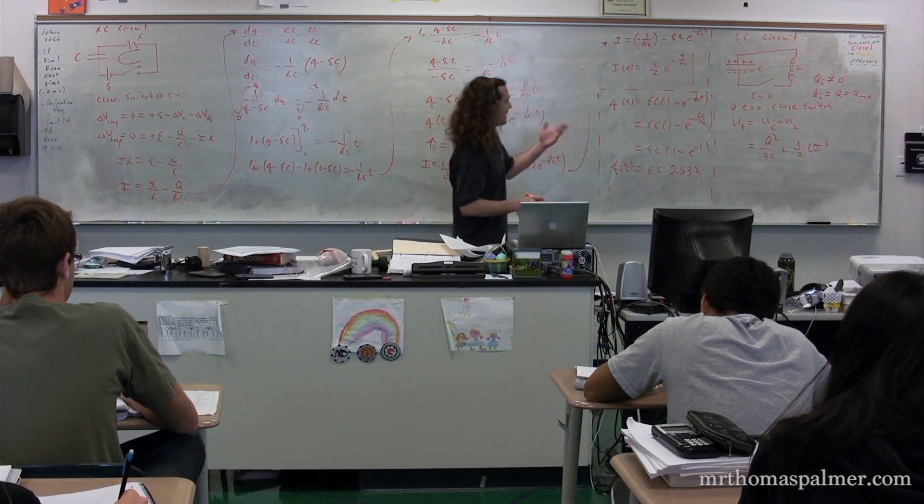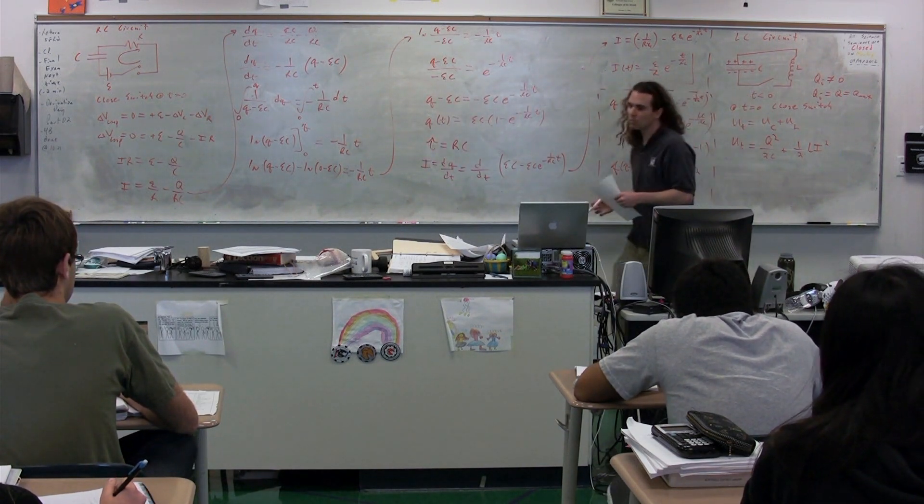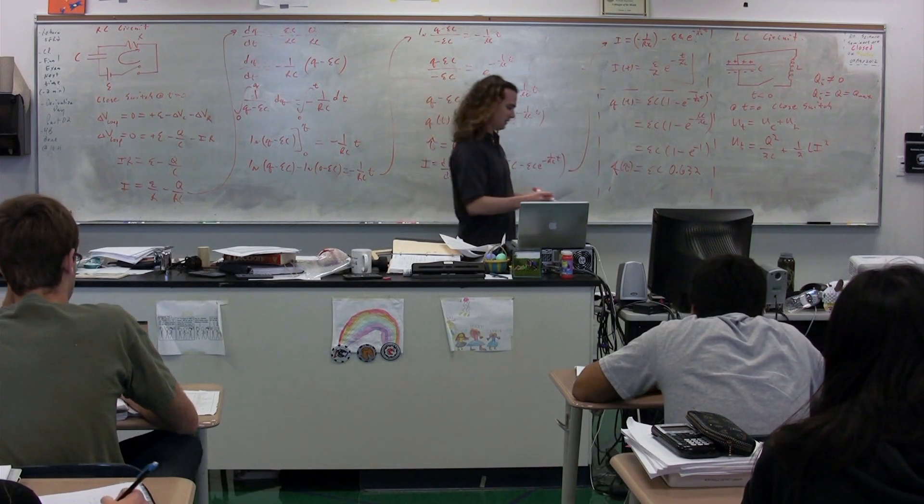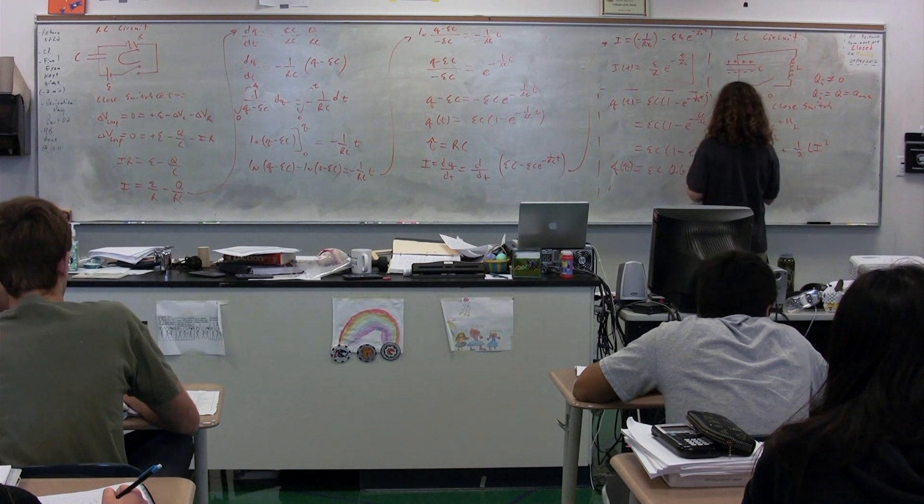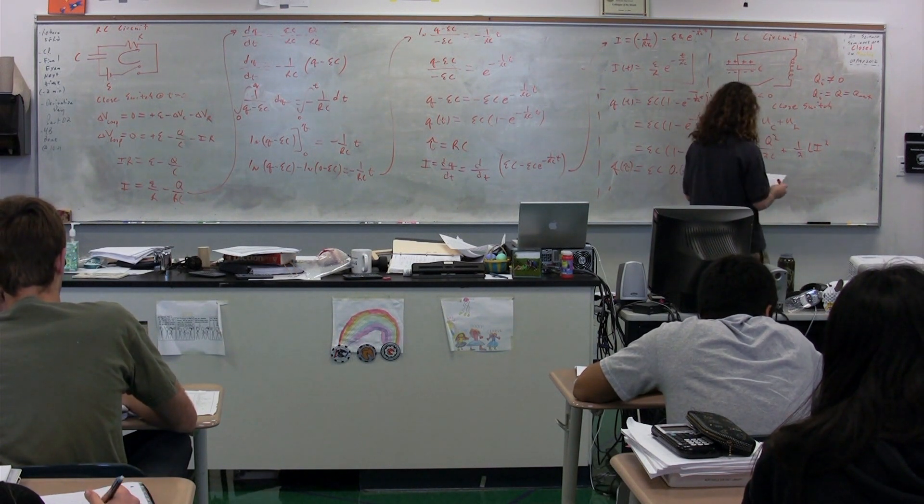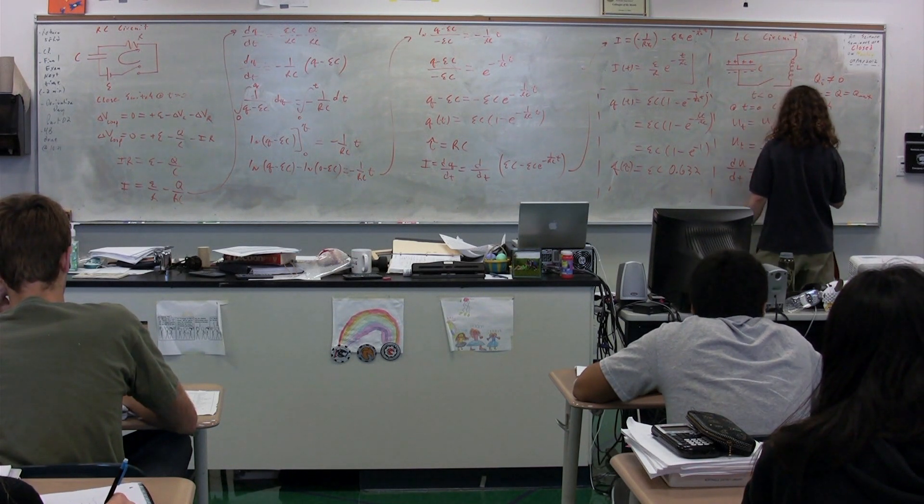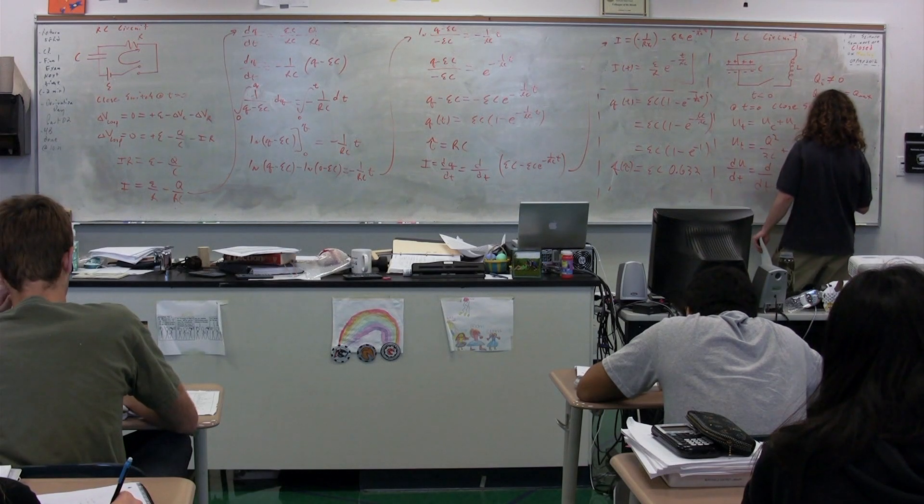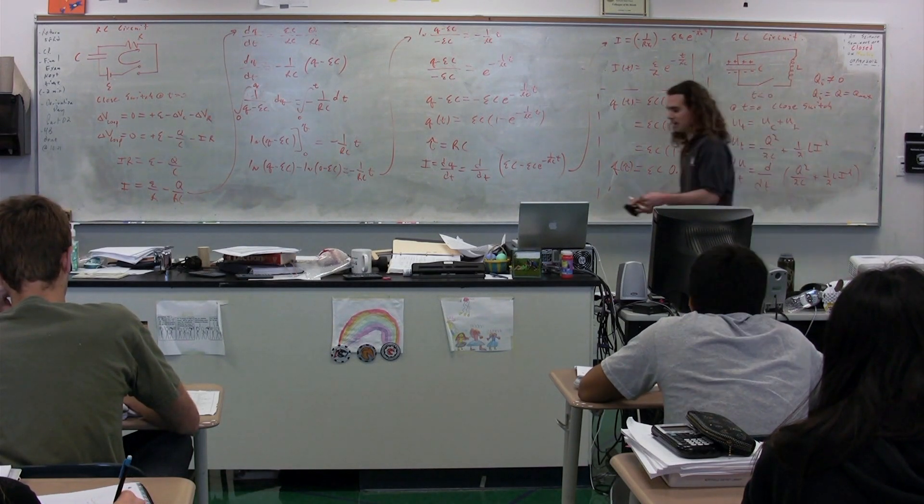That's the equation for the total energy. What do we do with this equation? So in order to get there, what we need to do is take the derivative of the whole thing. We have the derivative of the energy as a function of time. I'm going to take the derivative of this whole thing with respect to time: Q squared over 2C plus one half LI squared, all with respect to time.